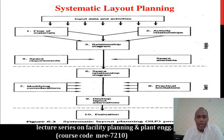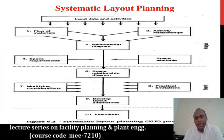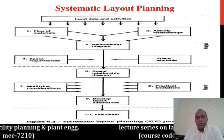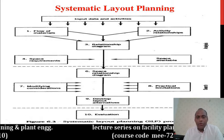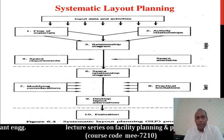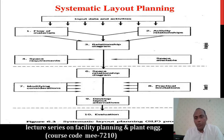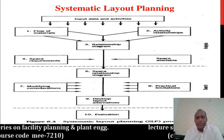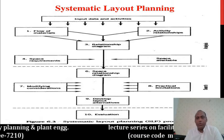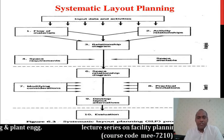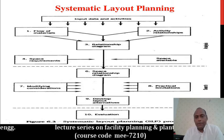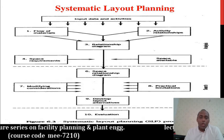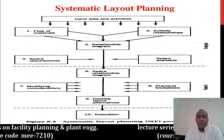The Systematic Layout Planning was developed by Muthar in 1961. Today, instead of using only computerized layout planning, we also use SLP. This systematic layout planning is basically divided into three sections: the first section is Analysis, the second is Search, and the third is Selection.